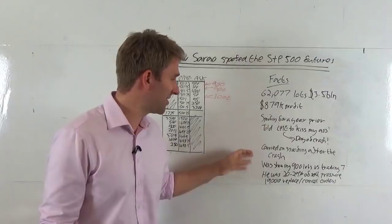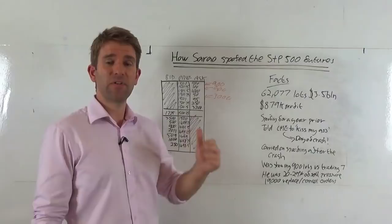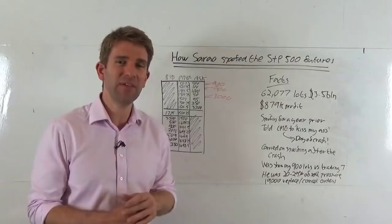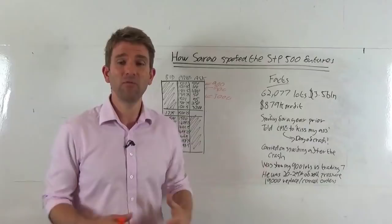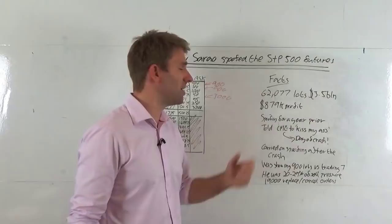He carried on spoofing after the crash. So after the flash crash had happened, for the next 12 days he was still spoofing, which indicated he perhaps didn't think he'd done anything wrong. He perhaps thought that he was in the clear, or he thought no one's going to catch me. He just made nearly a million dollars in profit, but he's still spoofing away.